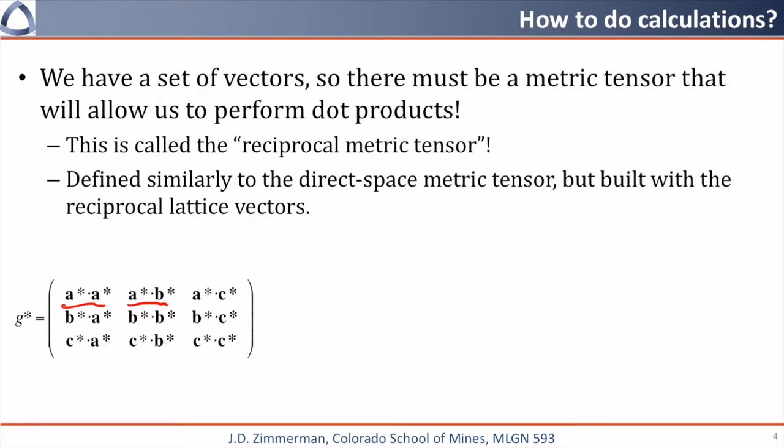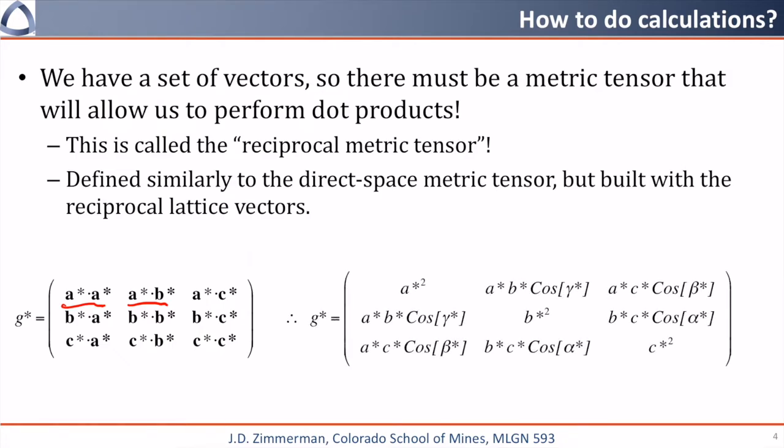This can be written out for non-orthonormal crystals to be the magnitude of a-star squared in the first entry, the magnitude of a-star times b-star times the angle between them in the second entry, and on and on throughout the rest of the matrix.